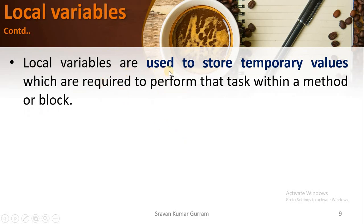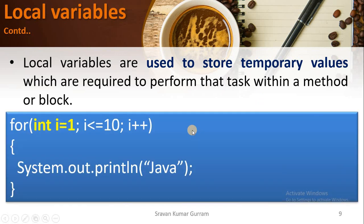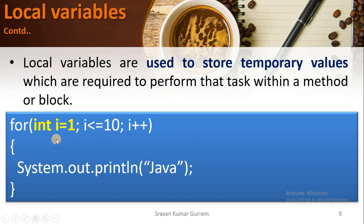Local variables are used to store temporary values required to perform a task within a particular block or method. For example, to print the word 'Java' 10 times using a loop, I use the variable I as a local variable. The intention of variable I is to count the iterations — counting first time, second time, third time, up to 10 times. That is why we use local variables to store temporary values.